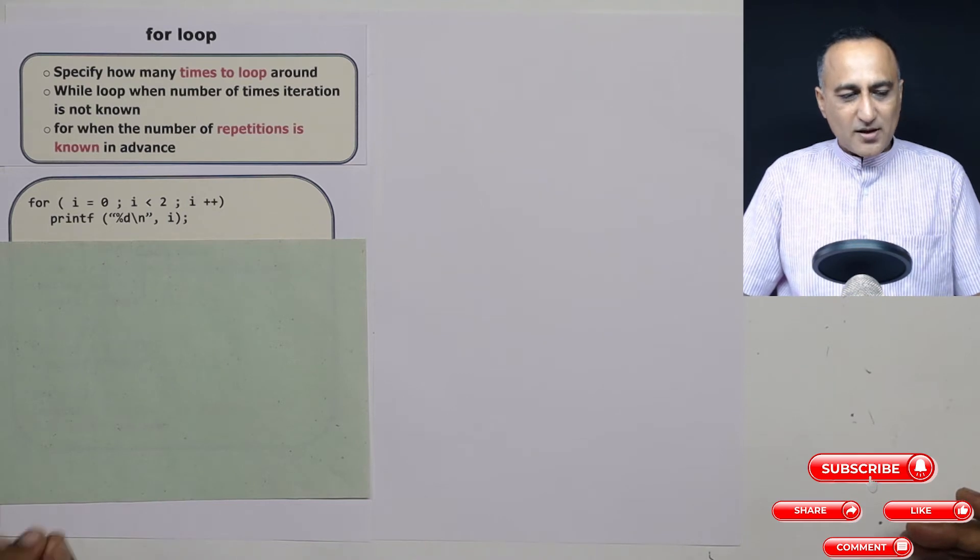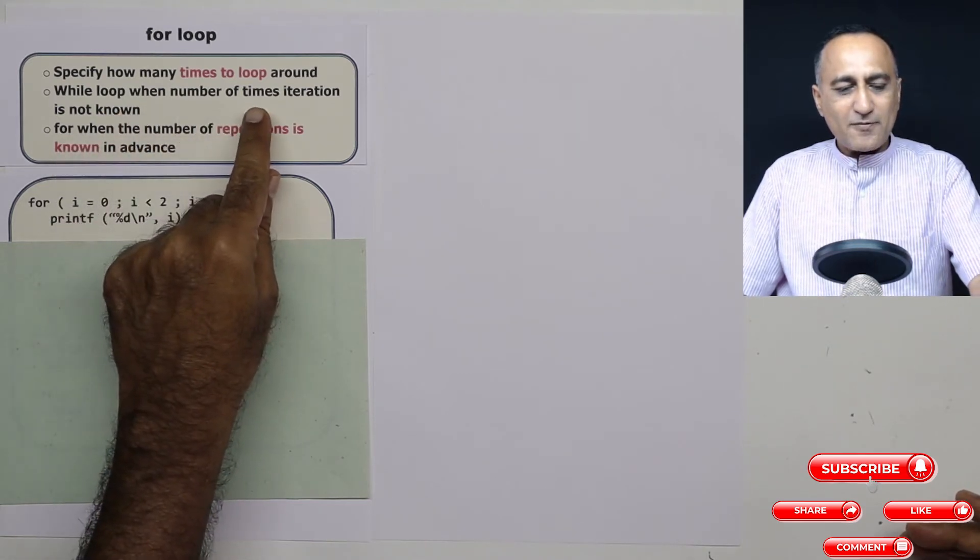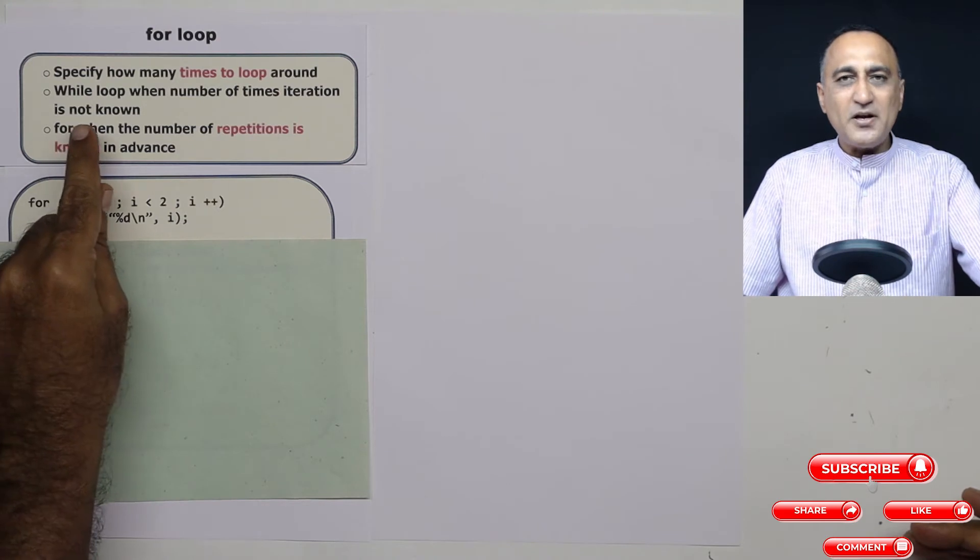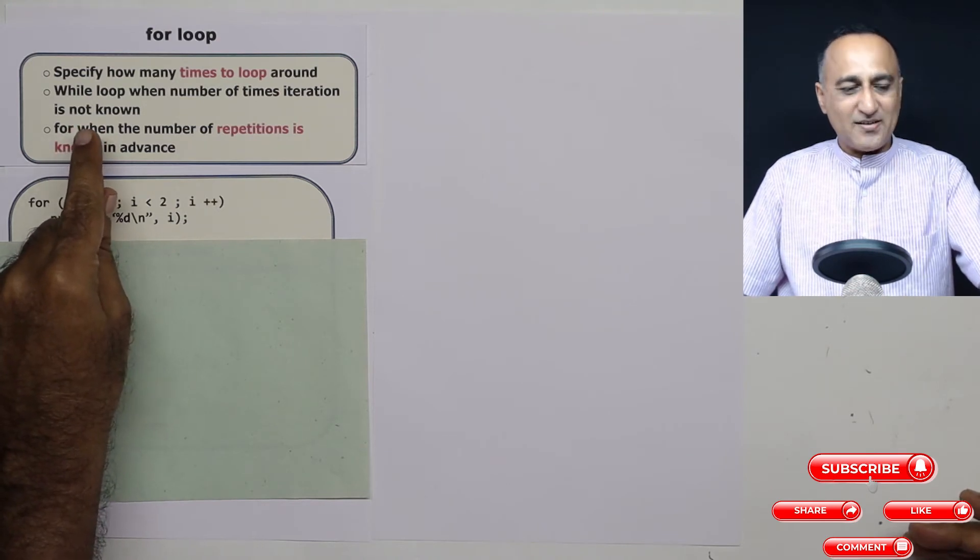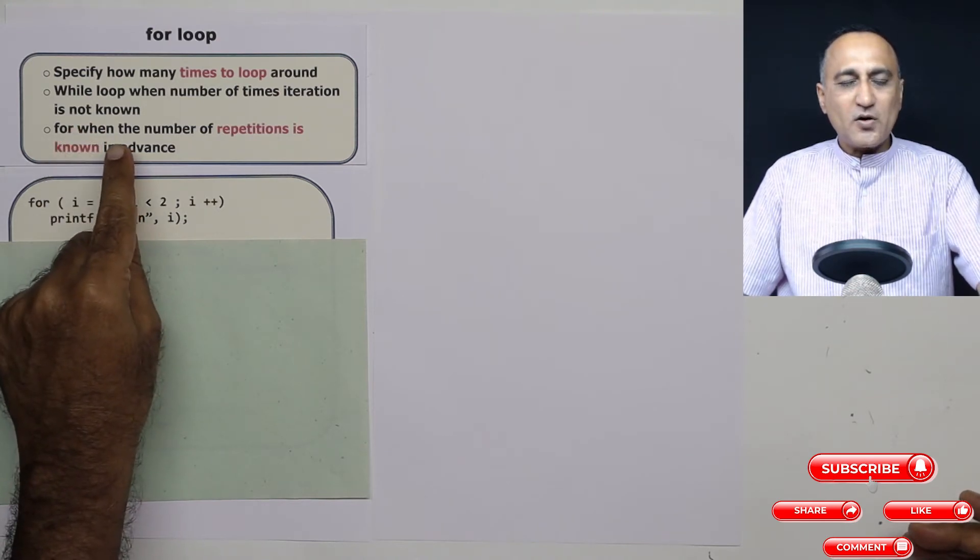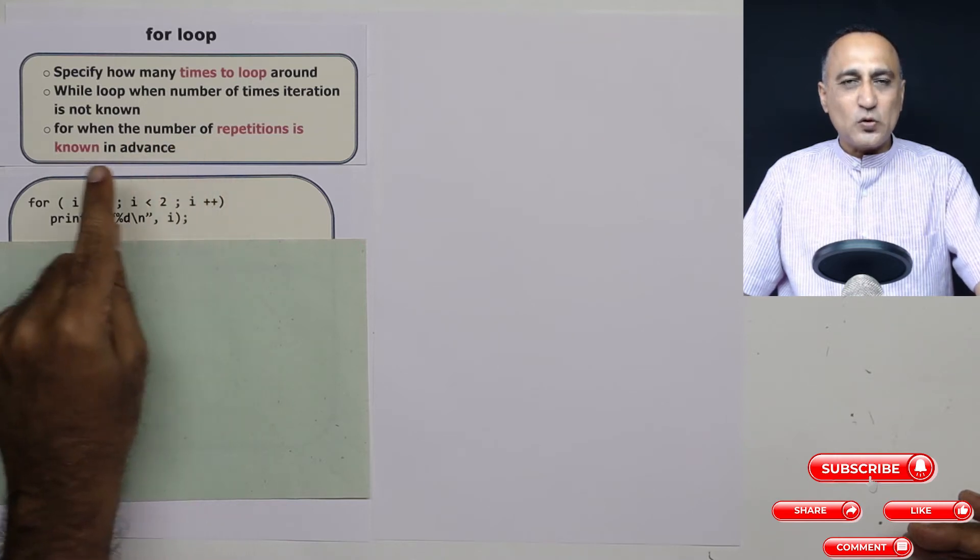So generally, while loop is used when the number of times of iteration or how many times you are going to loop is uncertain. The for loop is used when the number of repetitions is known in advance.